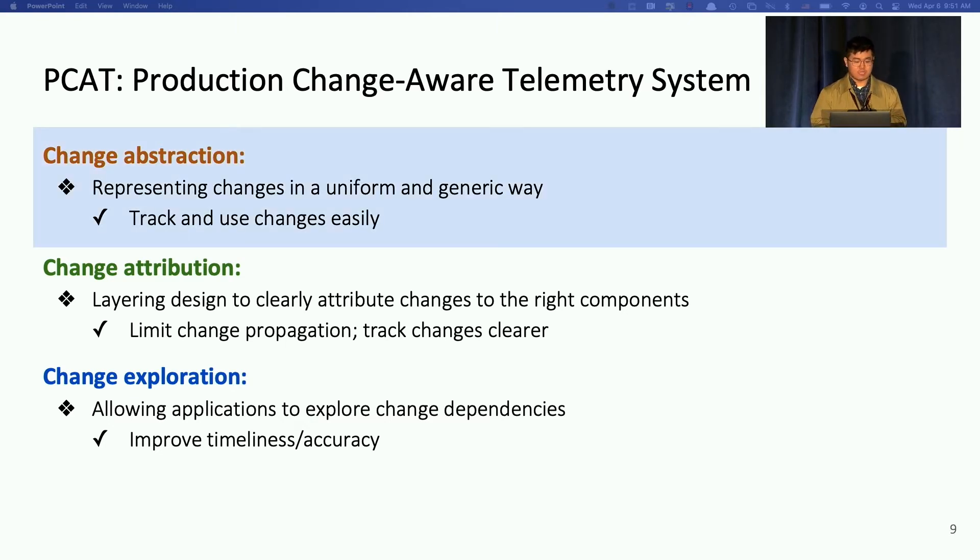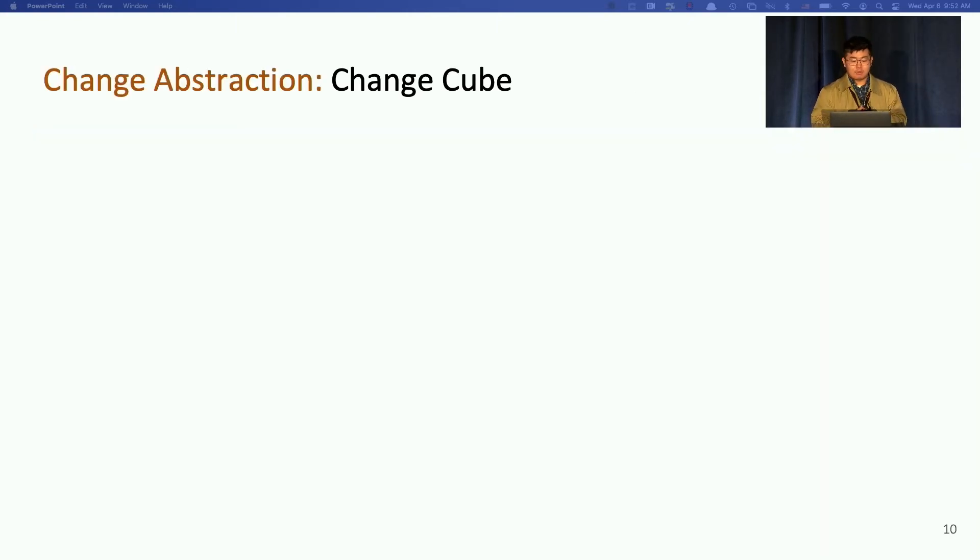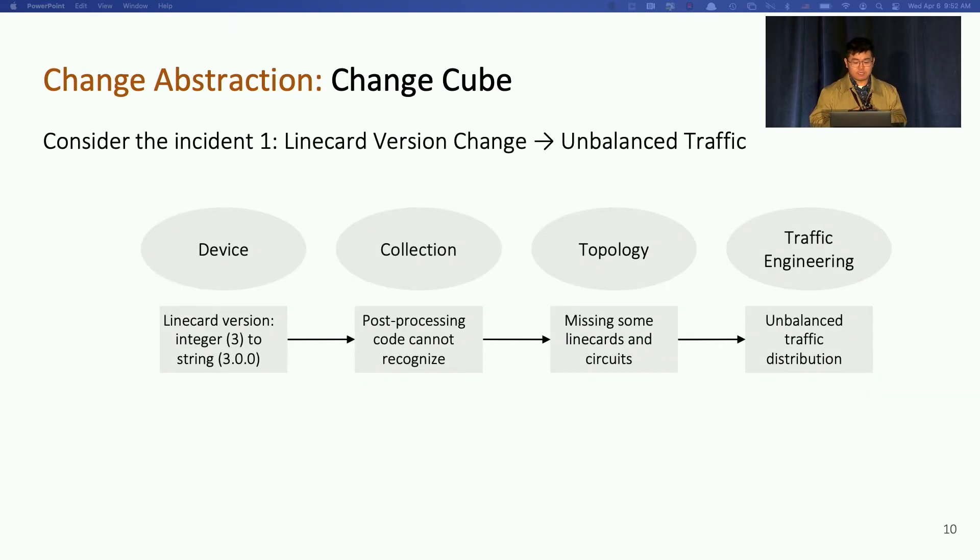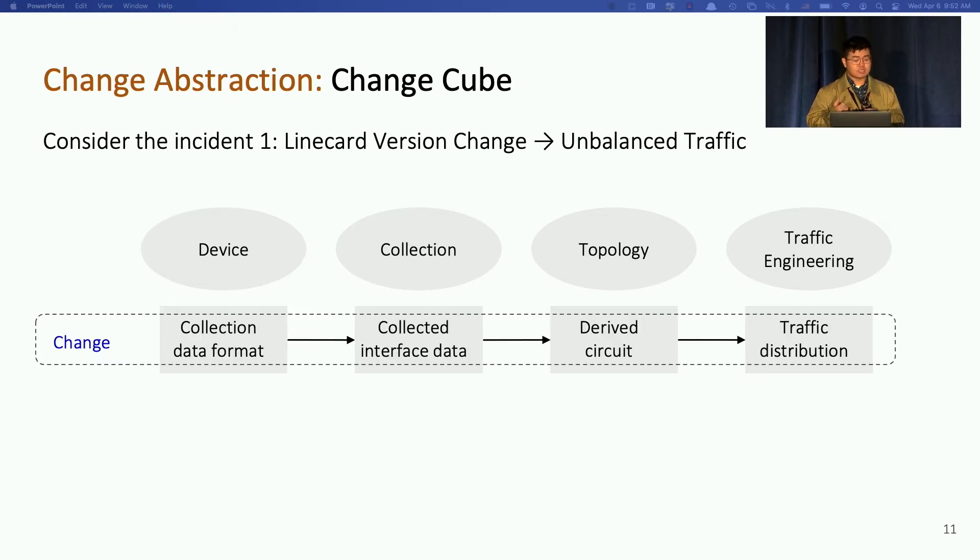So we will first talk about change abstraction. We adapt a concept called Change Cube from database community and find it useful in the context of telemetry system. So if you go back to the incident where line conversion change causes unbalanced traffic, there's actually a chain of changes happening on each layer. For example, the change of collection data format causes the error of collected interface data, and then missing some derived circuits, finally impacting the traffic distribution.